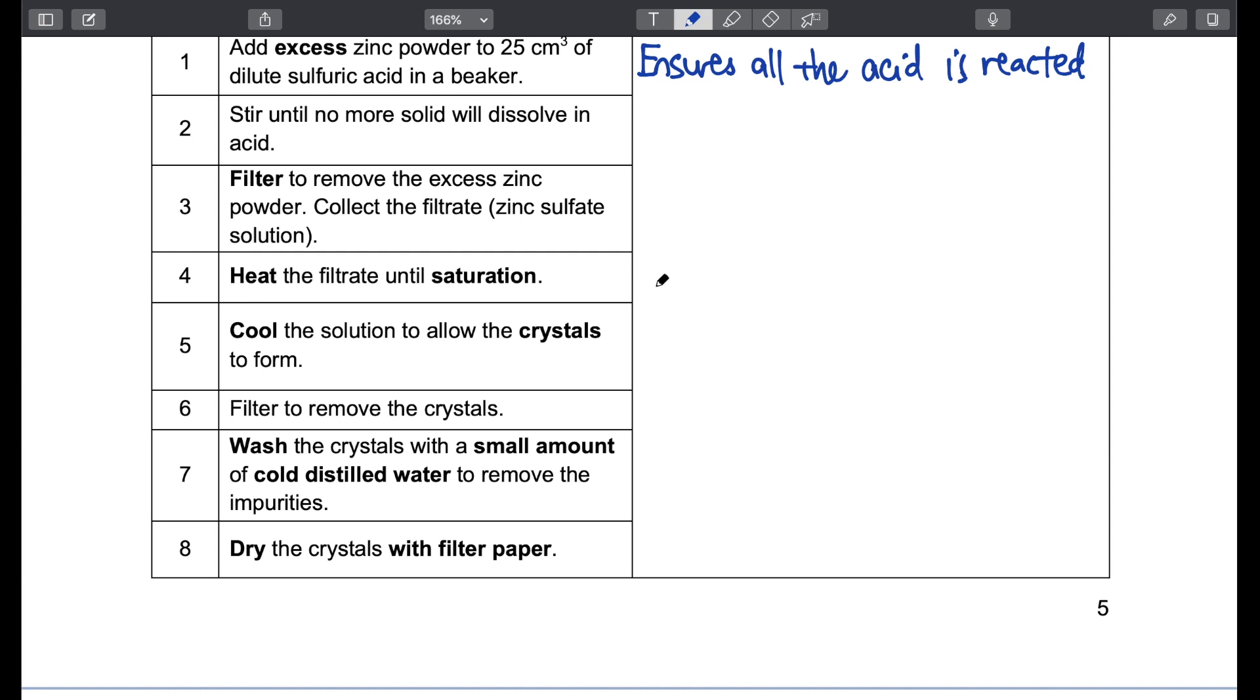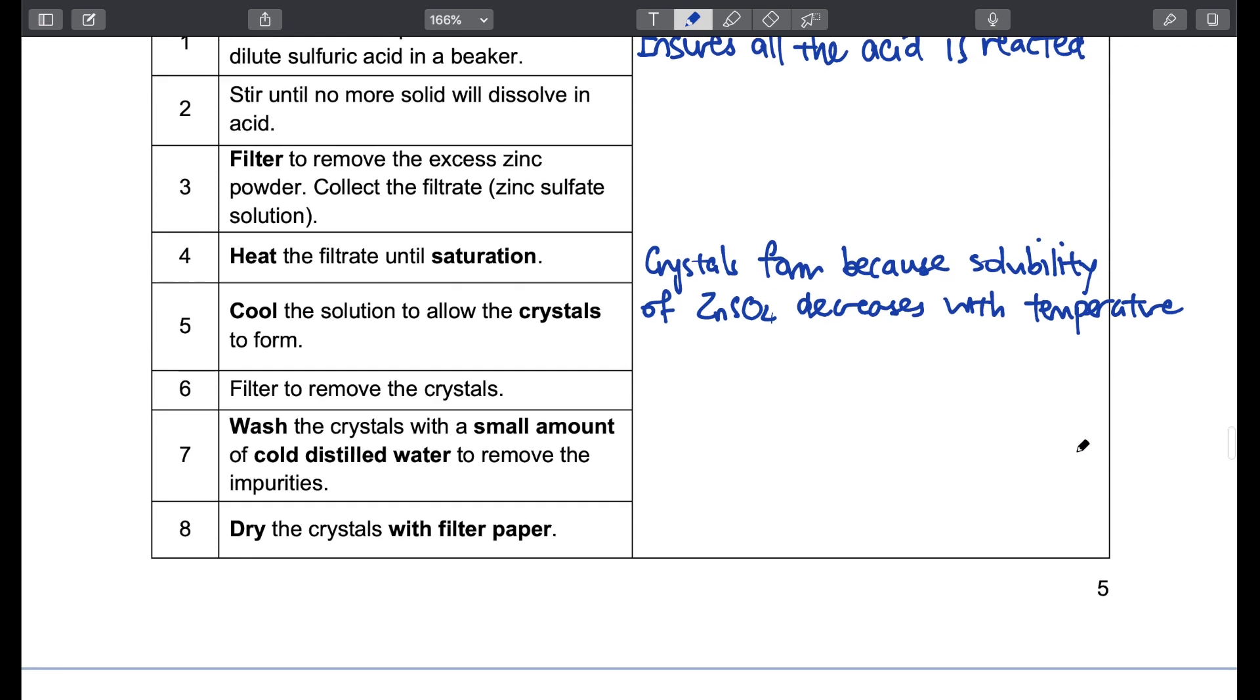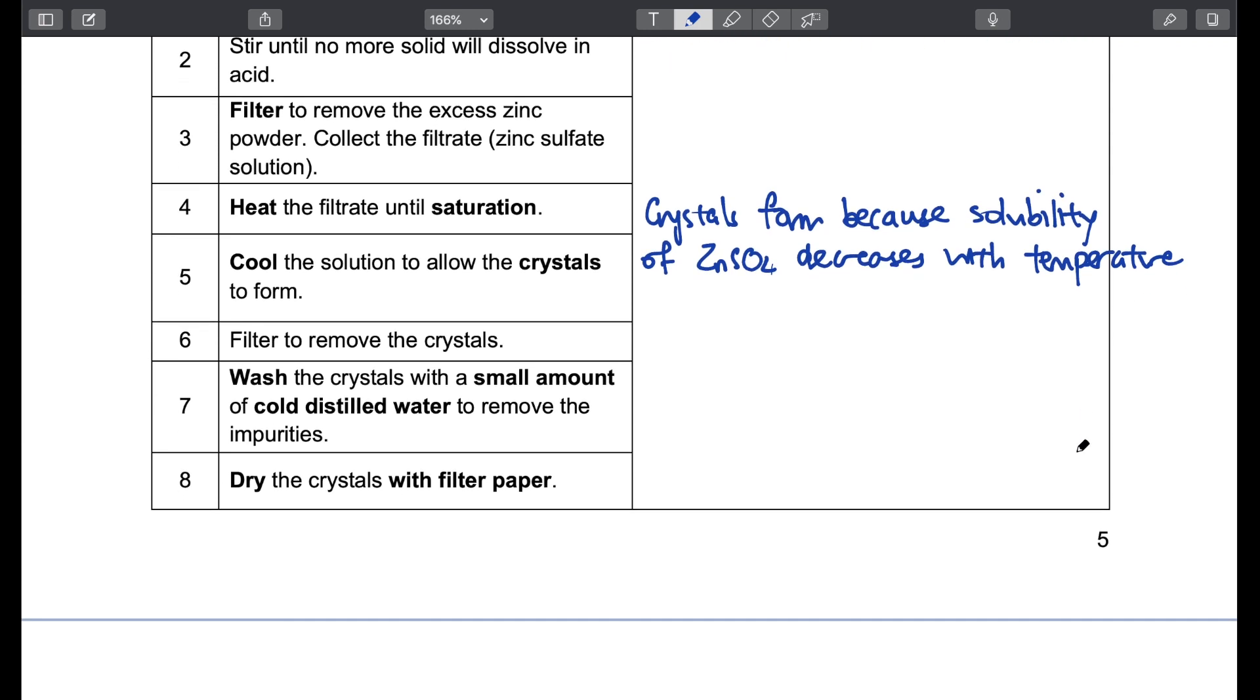To separate the crystals from solution, we have to filter the mixture to remove the crystals. We then wash the crystals with a small amount of cold distilled water to remove impurities. We have to use a small amount because otherwise the crystals would dissolve. And similarly, cold distilled water because at the lower temperature, the crystals are less likely to dissolve. So this step helps to remove any impurities. Finally, dry the crystals between sheets of filter paper.